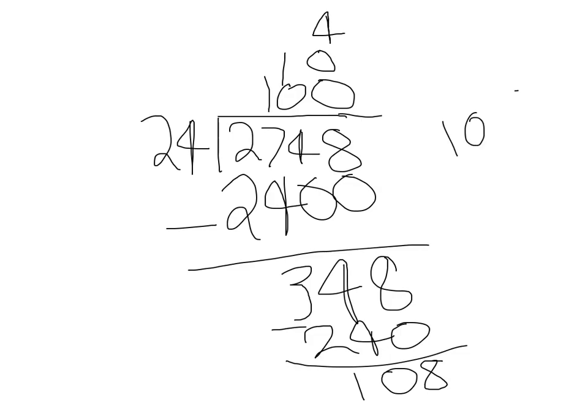Now, 108 minus 96. 8 minus 6 is 2. And then, we can't subtract 9 from 0, so we're going to borrow from the 1's place. And now the 1's a 0. And put the 1 next to the 0 to make it a 10. 10 minus 9 is 1. And now we have a remainder of 12.